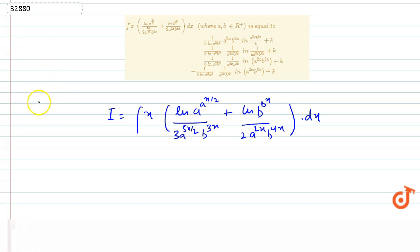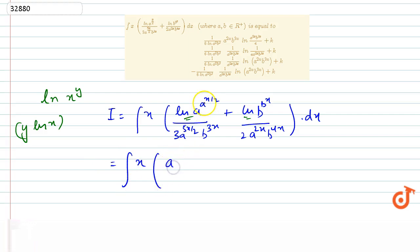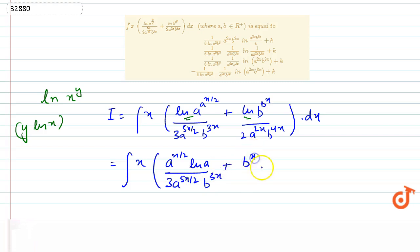We know that if we have log of x^y, then we can write it as y·log(x). Applying this rule, the integration becomes: x times a^(x/2)·log(a) divided by 3, into a^(5x/2)·b^(3x), plus b^x·log(b) divided by a^(2x)·b^(4x).